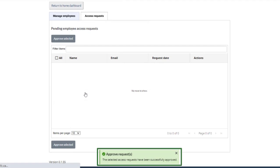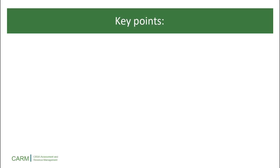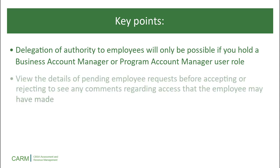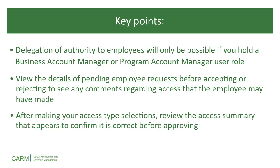The access request has been successfully approved. Here are some key points to remember. Delegation of authority to employees will only be possible if you hold a Business Account Manager or Program Account Manager user role. View the details of pending employee requests before accepting or rejecting to see any comments regarding access that the employee may have made. And finally, after making your access type selections, review the access summary that appears to confirm it is correct before approving.